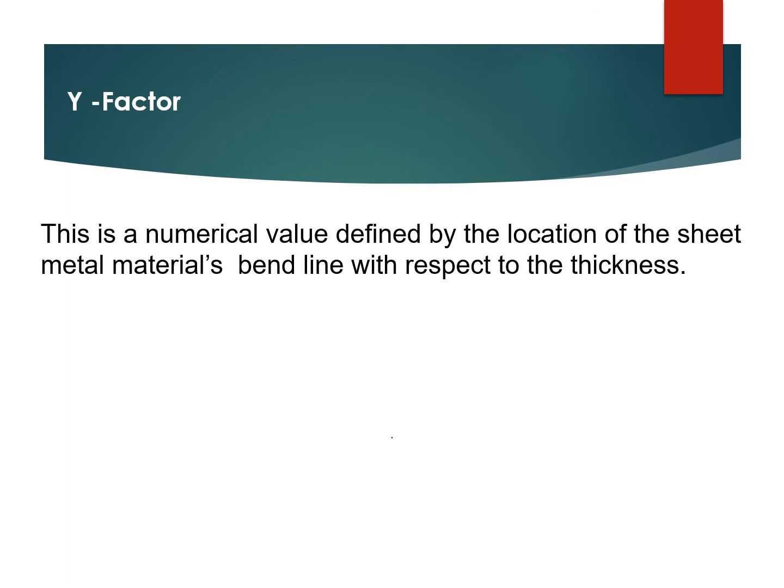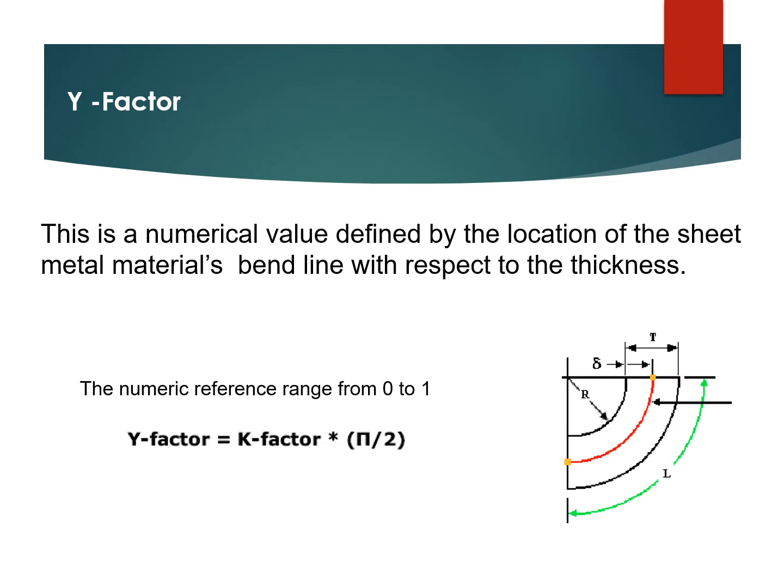The Y factor is a numerical value defined by the location of the sheet metal material bend line with respect to the thickness. The Y factor equals K factor multiplied by π/2. So whatever K factor value we have, multiplied by π/2, gives us the Y factor.